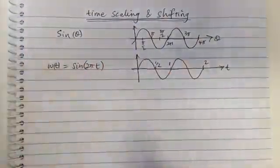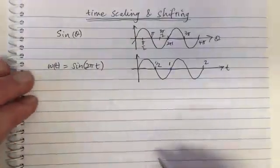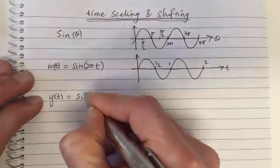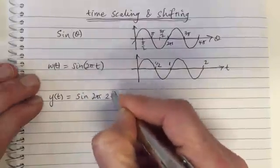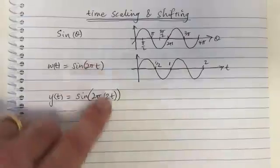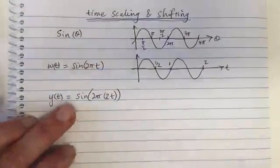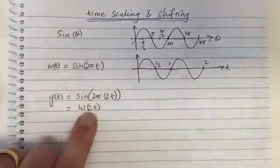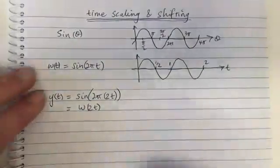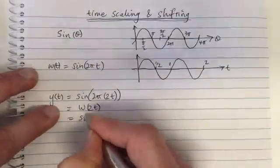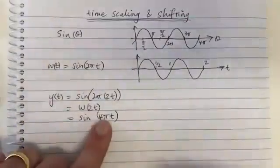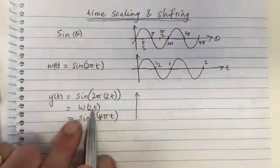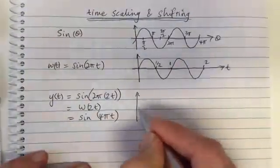Now let's see what happens if we scale time. Let's make a new function y(t) = sine of 2 pi times 2t. We've replaced t with 2t. This function equals w(2t), which we can expand out: sine of 4 pi t. Let's plot that. This is time scaling — we've scaled time by multiplying it by a constant, in this case 2.